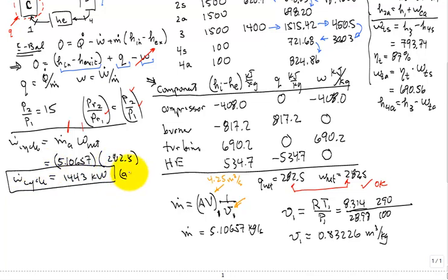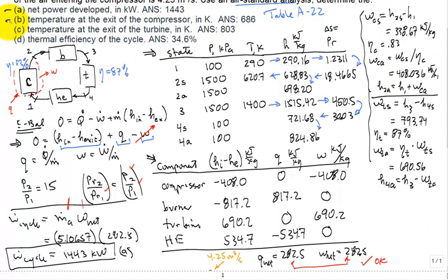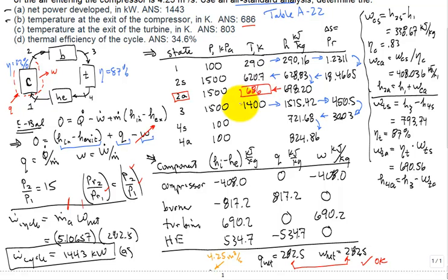For part B, the temperature at the exit of the compressor: using h2_actual = 698.20 kJ/kg, interpolating in Table A22 gives T2_actual ≈ 686 K. For part C, the temperature at the exit of the turbine: using h4_actual = 824.86 kJ/kg, interpolating gives T4_actual ≈ 803 K.